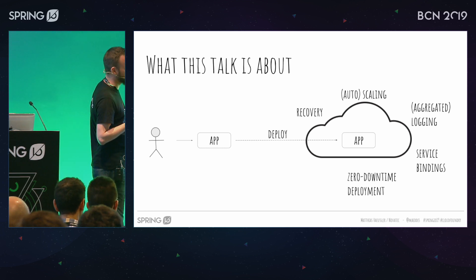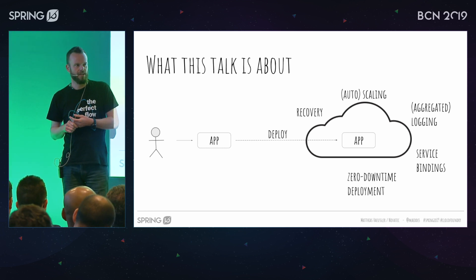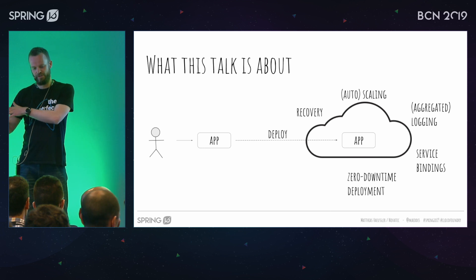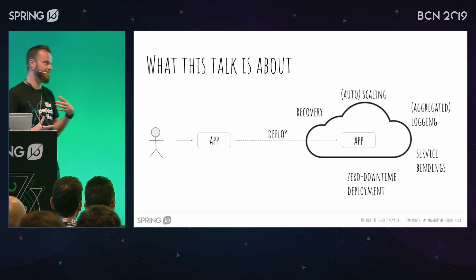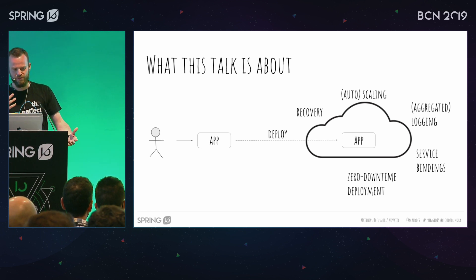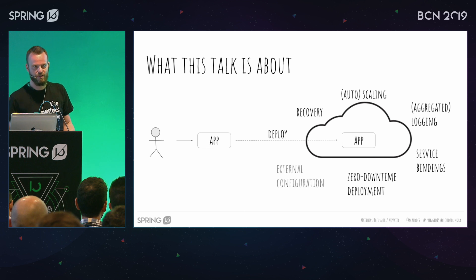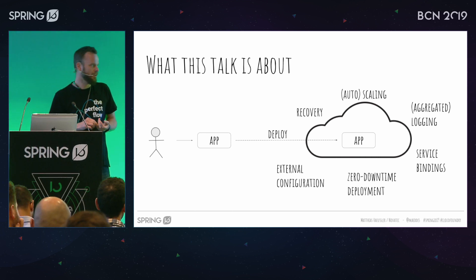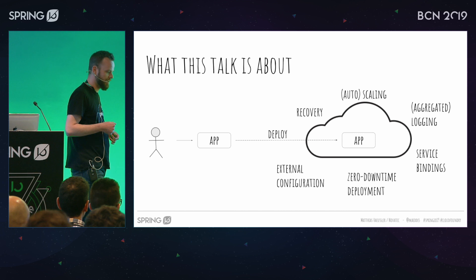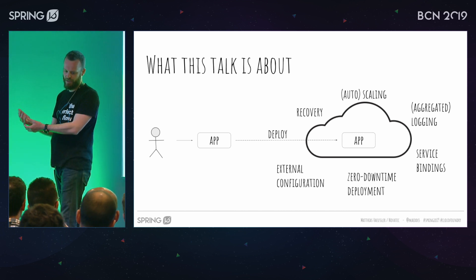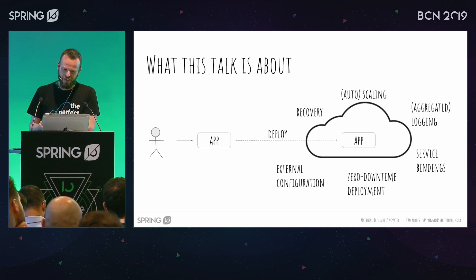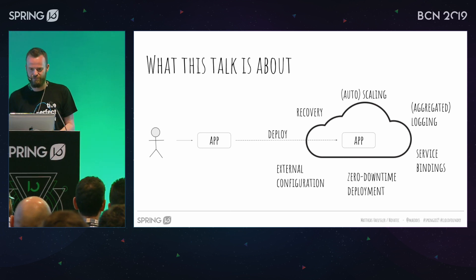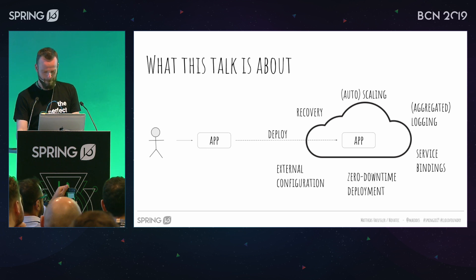Zero downtime deployment: if I have a certain version of the application running and I want to deploy a new version, is there a possibility to have a transition that the end user would not notice — the way Amazon or Facebook does it all the time, where you refresh your browser and something has changed but there's no obvious downtime. Something also relevant in Spring Boot is external configuration: how can I access my Spring Boot properties and modify them during runtime? I have roughly 45 minutes to do all that, and I'll try to show most things live.